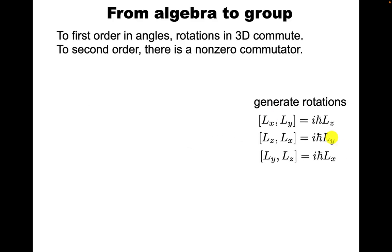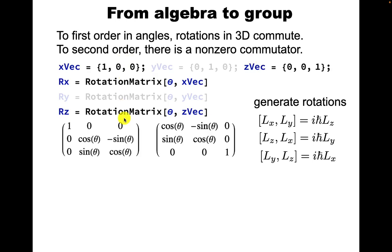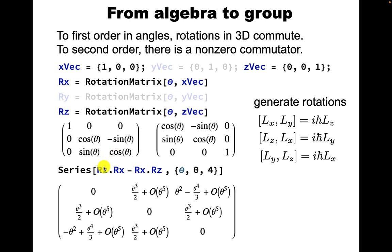What does it mean the angular momentum generates rotations? What it means is that if you write a rotation matrix to first order in angles, rotations commute, but to second order and higher, they don't. And we can phrase this as there's a non-zero commutator among rotation matrices. So you define unit vectors in the x and z directions. These two rotation matrices x and z are given as the following. Now compute the series expansion of the commutator of R_z and R_x. You see that to first order, it's zero. But to second order, you have a term up here and down here.